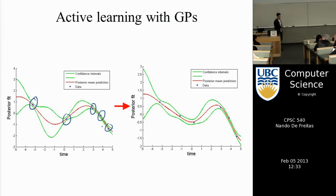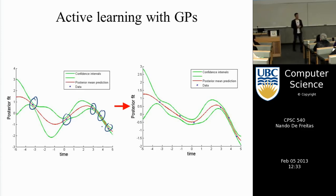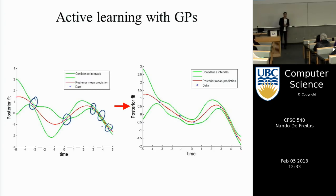The key to Gaussian processes is that they capture our belief that a lot of functions in the real world are smooth. If you look at the space of natural images and sounds in the world, you will find that smoothness is a very reasonable assumption. So if the data we acquire from the world satisfies this property, we would expect Gaussian processes to be a very powerful way of modeling the world.